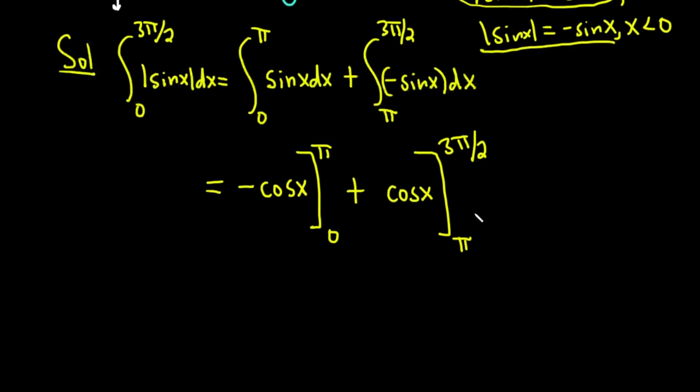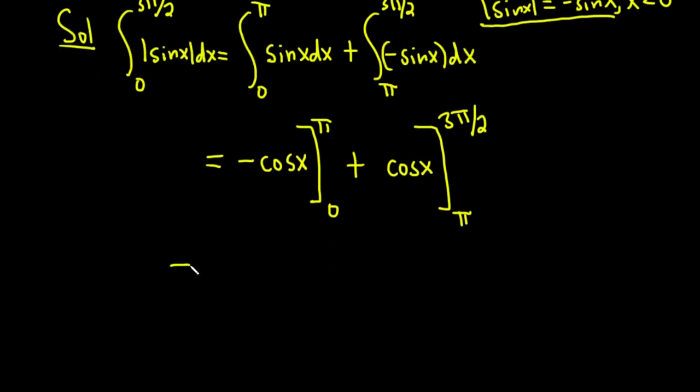Alright, so now we plug in the top number first. So this is equal to negative cosine of pi. Minus, and then we plug in the bottom number, parentheses, negative cosine of 0. Not skipping any steps. It's really easy to mess up in problems like this. So you plug in the pi. You subtract because you're always supposed to subtract. And then we have negative cosine of 0 because we plugged in the 0.